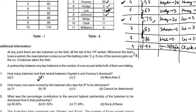The next question was: how many runs were scored by the batsman who was the 9th to be dismissed? It can be Lee or it can be Clark. So the answer is C or D — we don't know the exact value, as there are 2 values possible.